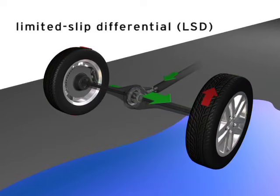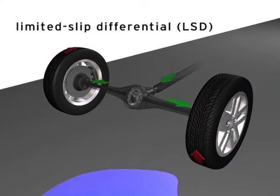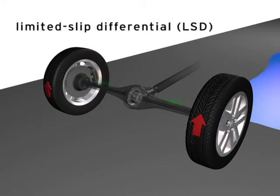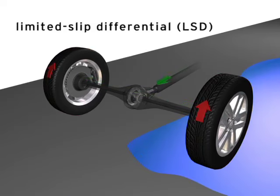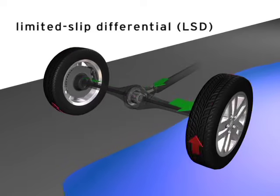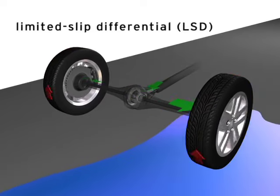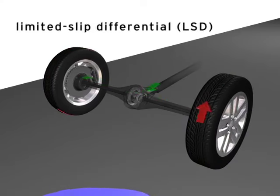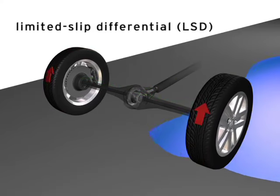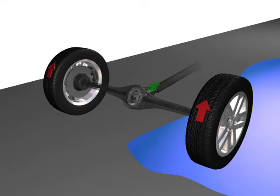The benefit of a limited slip differential is that the amount of power sent to the wheel with the least traction is limited so that the wheel with the most traction receives continuous power in order to get the vehicle moving. The disadvantage of a limited slip differential is the amount of power that can be transmitted to the wheel with traction is also limited.